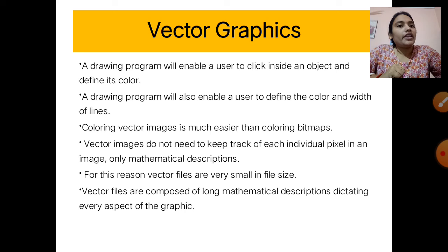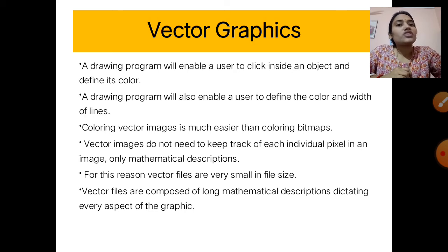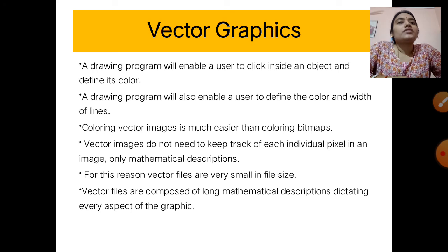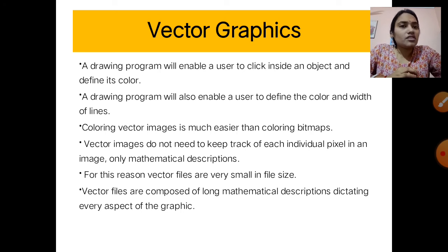Coloring vector objects is similar to coloring with crayons in a coloring book. A drawing program enables a user to click inside an object and define its color. MS Paint is an example of raster graphics — when you enlarge the image it shows you pixels. A drawing program also enables a user to define the color and width of lines. Coloring a vector image is much easier than coloring a bitmap.